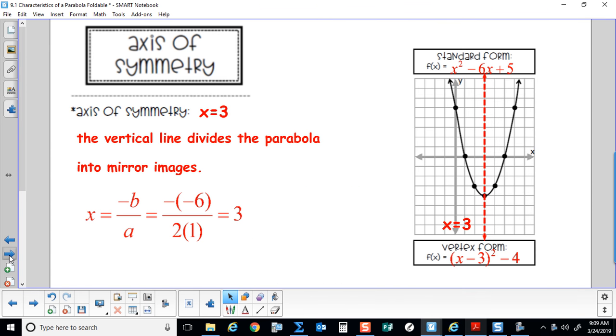The axis of symmetry. The axis of symmetry in this instance is x equals 3. It's the vertical line that divides the parabola into mirror images. The way we calculate the axis of symmetry is we take x equals negative b over a, and that gives us our line of symmetry.